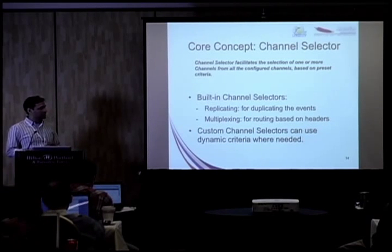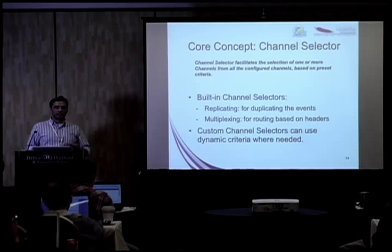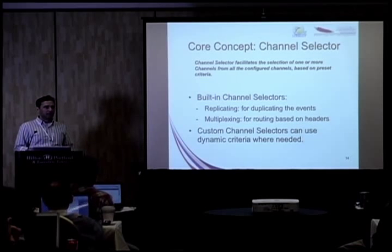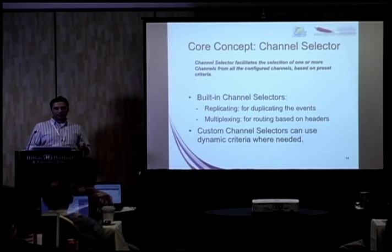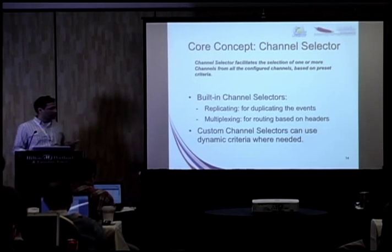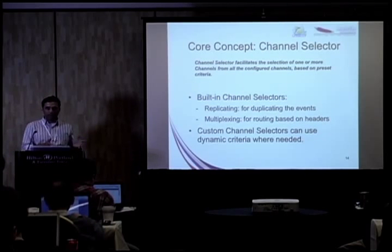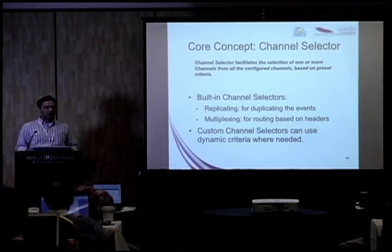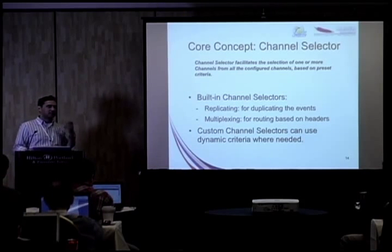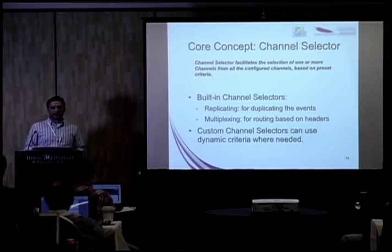You also have channel selectors. When a source is configured with multiple channels, a channel selector can decide which channel a batch of freshly arrived events should go to. This allows you to have custom routing logic. There are a couple of channel selectors that come out of the box: the replicating channel selector and the multiplexing channel selector. Replicating copies your event data over — it's a fan-out flow. The multiplexing selector allows conditional hops: if my event data has a certain header, send it to that channel.